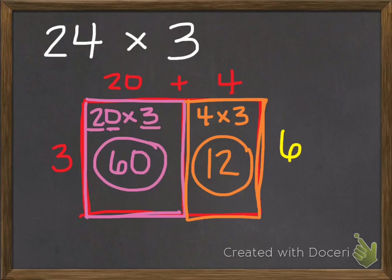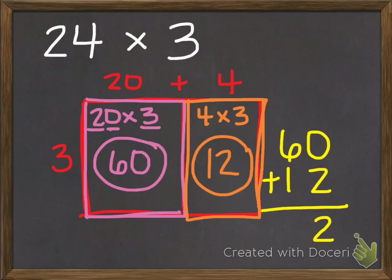The 60 plus 12. And I get 72. So I know that 24 times 3 equals 72.